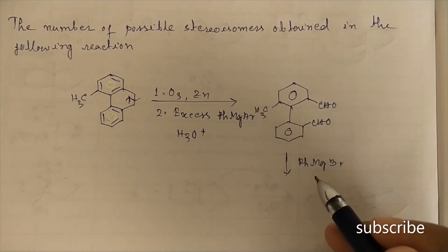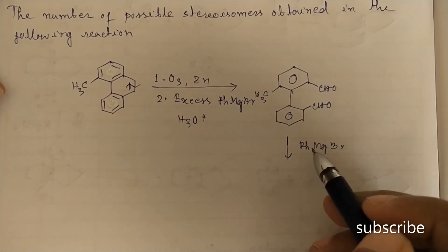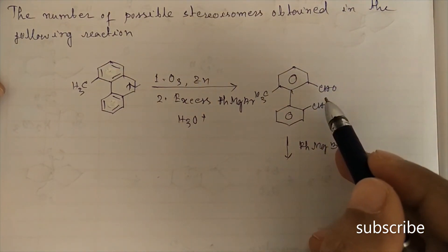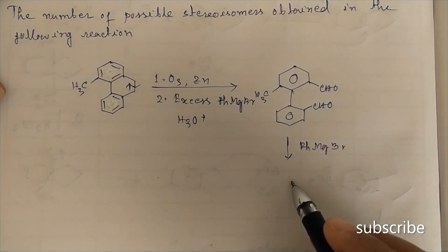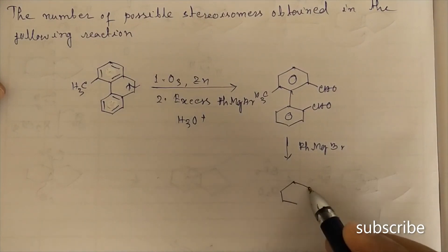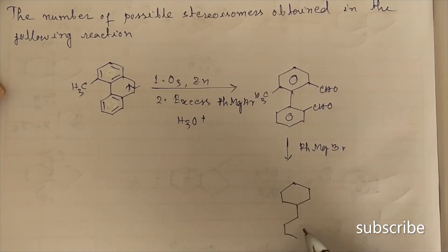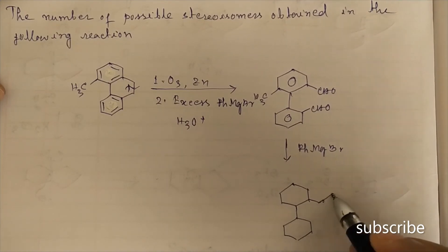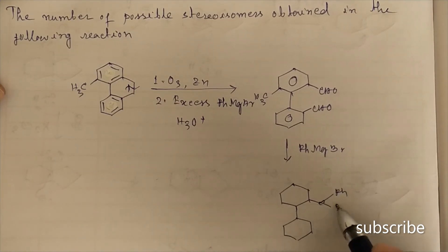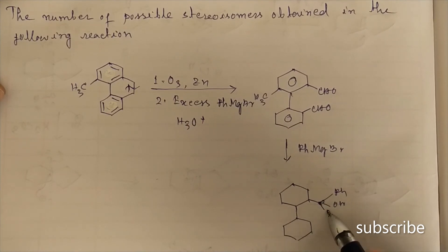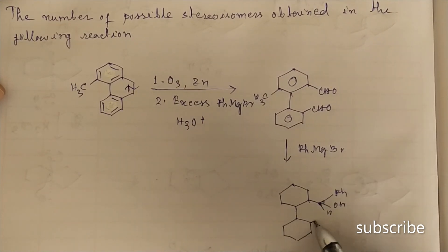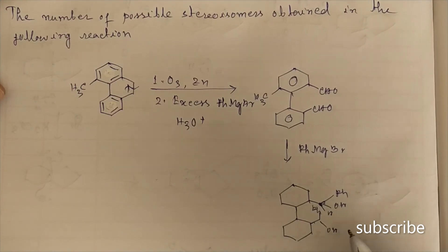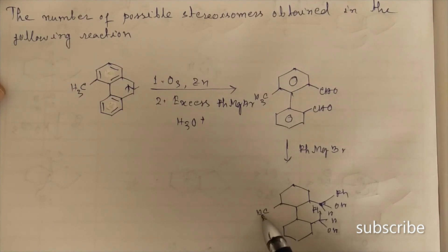Ph⁻ from PhMgBr attacks the CHO groups. Each CHO is converted to a Ph–C(OH)–H alcohol. The product therefore has two Ph–OH carbinol centers, and the CH3 group remains.